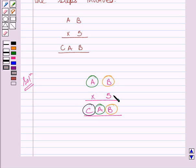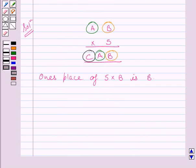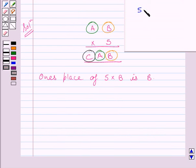Now clearly you can see one's place of 5 multiplied by B is B. Now this is possible only if value of B is equal to 0 or 5. We know that 5 multiplied by 0 is 0 and 5 multiplied by 5 is 25. Now, one's place of 5 multiplied by 0 is 0 only and one's place of 5 multiplied by 5 is 5 itself.